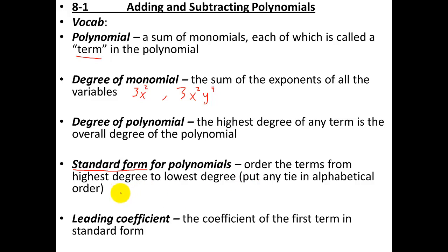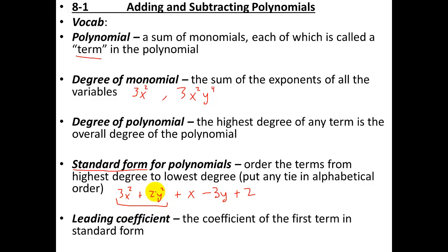For example: 3x squared plus 2y squared plus x minus 3y plus 2. Why is this in standard form? The first two terms both have a degree of 2, the next two terms both have a degree of 1, and the last has a degree of 0 because there are no exponents. Within the two degree-2 terms, they're in alphabetical order — x comes before y, and then again x before y, then just numbers at the end. The leading coefficient of a standard form polynomial is the number in the very front — leading because it's in the front, coefficient because it's the number.